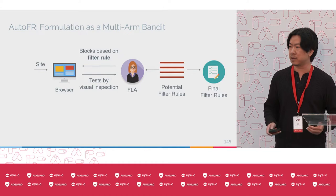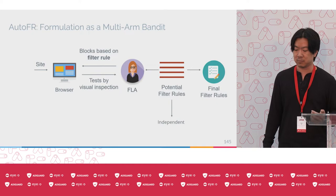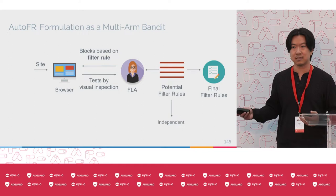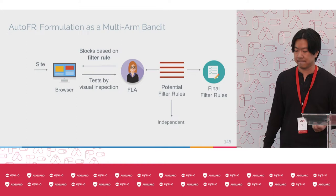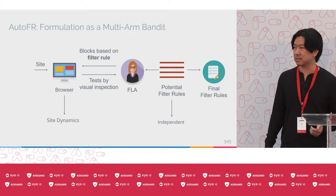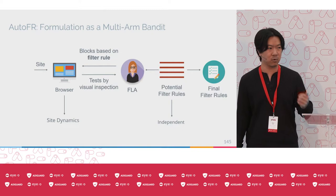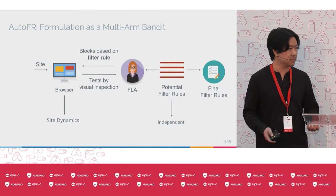We formulate the problem as a multi-armed bandit problem for two reasons. First, we consider the effect of filter rules on the site as independent. For example, rule A will block one ad and rule B can block two other ads, and if you use them together they'll block at most three ads. The other factor is site dynamics — every time a user visits the site, different ads and content can be served. So testing a particular filter rule once is not enough; you have to test it multiple times to ensure effectiveness across different visits.